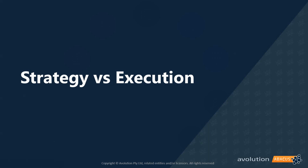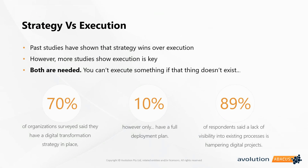In digital transformation, we're oftentimes stuck between strategy and execution. Senior executives might feel relatively comfortable that their organizations are prepared, but a third of IT personnel believe that those senior executives would be concerned if they had a better understanding of the IT department. Past studies have shown that strategy wins over execution, especially when it comes to having a digital strategy. So execution is key — both are needed. You certainly need strategy, but it's also important that you understand how to proceed forward in executing that strategy.